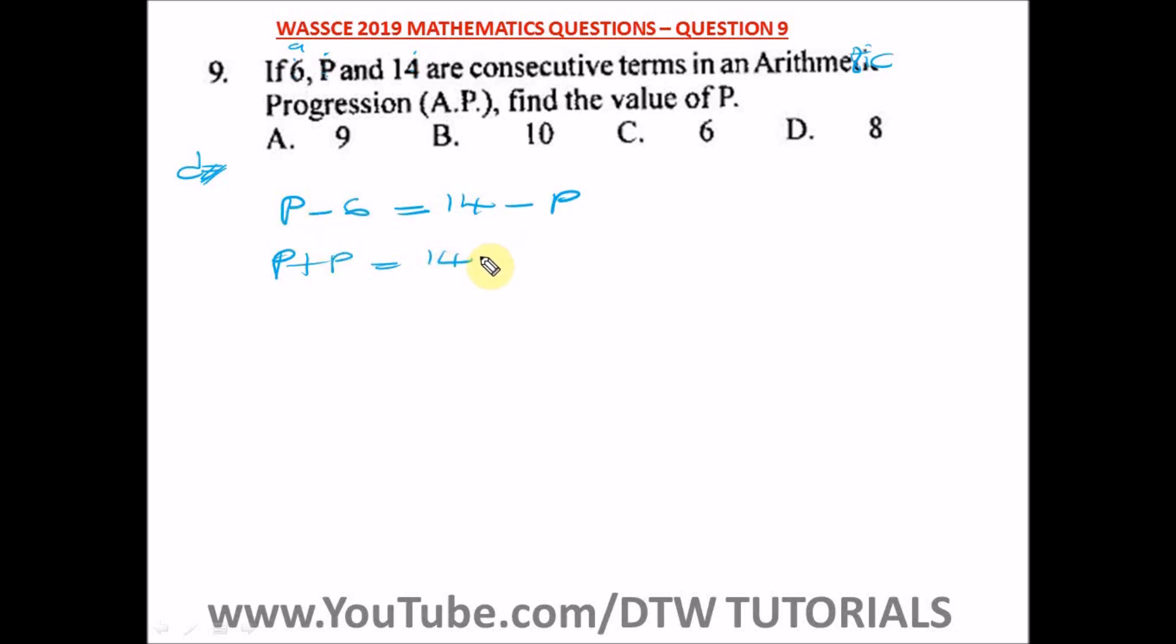P plus P will give us 2P is equal to 14 plus 6, that gives us 20. We are looking for P, so we divide both sides by 2 so that 2 can cancel out and we get our P.